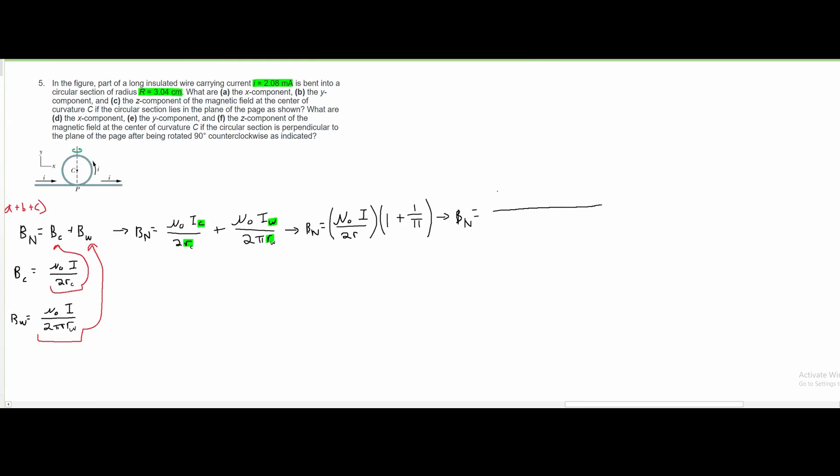Our μ₀ is constant, so this is going to be 4 times π times 10 to the negative 7 tesla meters over amps. This is going to be multiplied by our current, which is 2.08 mA. We need to convert this to just amps, so this is going to be 2.08 times 10 to the negative 3 amps. And underneath, we have our 2r. So we have 2 times our r, which is 3.04 centimeters, or 3.04 times 10 to the negative 2 meters.